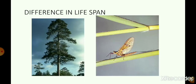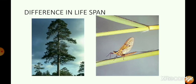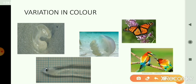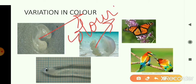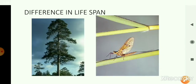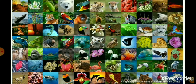In terms of lifespan, you have organisms like mosquitoes which live for just a few days, and organisms like the pine tree which lives for thousands of years. This variation is also seen in terms of colour. Organisms like worms and jellyfish are colourless, while butterflies, birds, and many flowers are beautifully coloured. Variations are also seen in terms of the places where organisms live and the kind of food they eat.